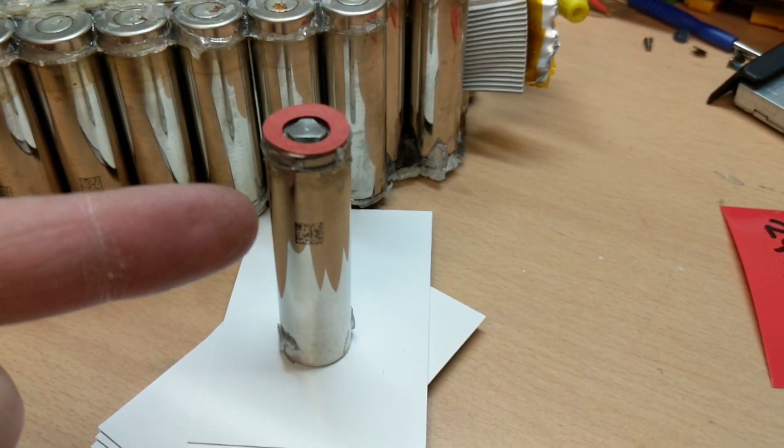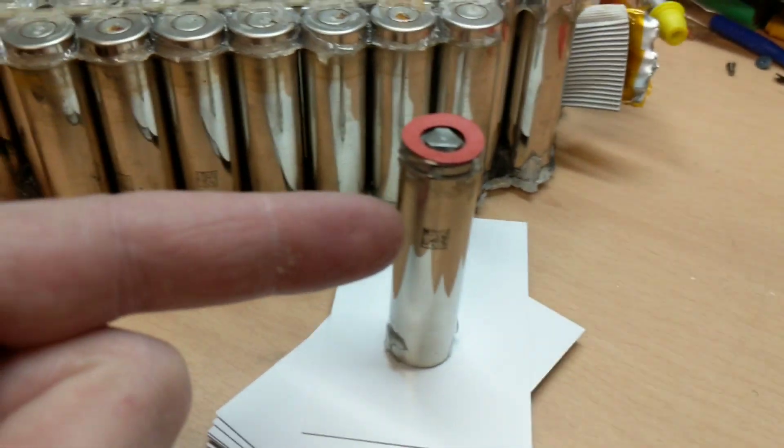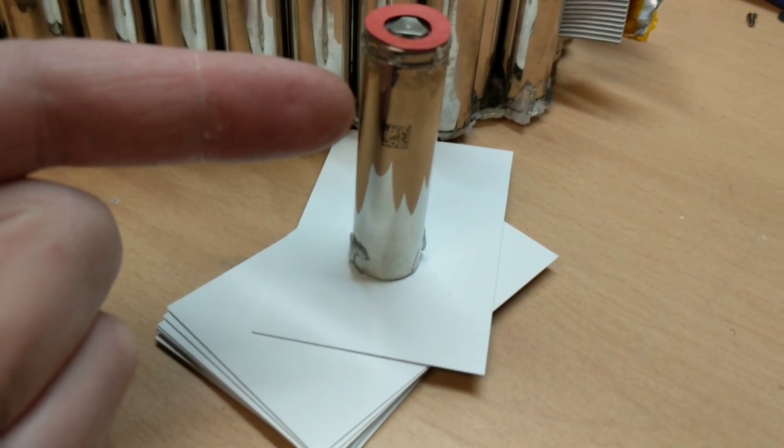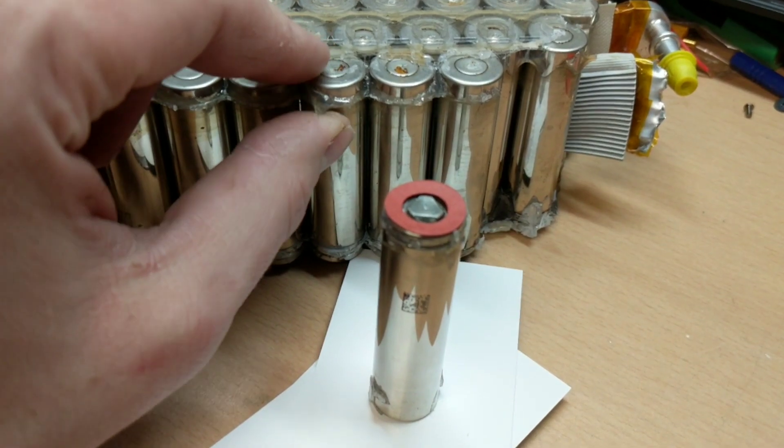So this is a Tesla battery, 18650. I think it's supposed to be 3,600 milliamps, but most of them are testing about 3,000. That's where it's come from, man. This stuff's hard to get off.